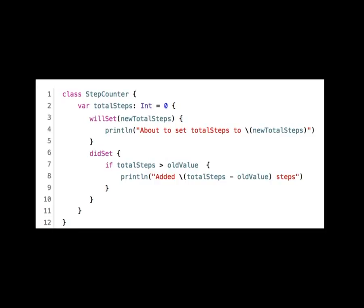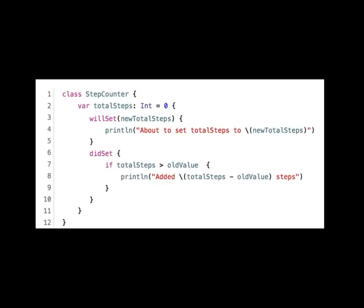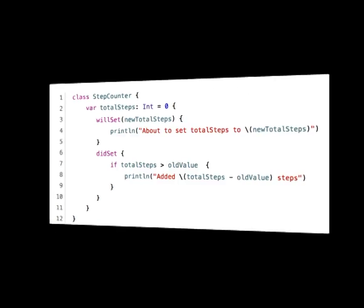You can also write observers using the same grammar. `willSet` and `didSet` will run before and after any values change. You can also write a computed value, where there isn't necessarily a variable behind it — the value is calculated on demand like a property but recalculated every time. Closures can also be used here; if you use a closure to instantiate a value, include an empty set of parentheses to run it, and it will have a stored value.